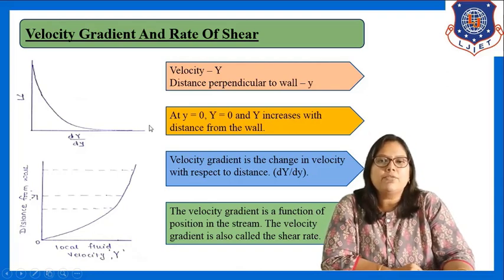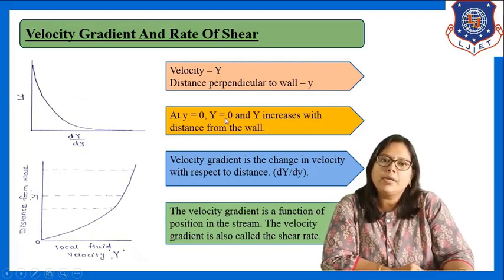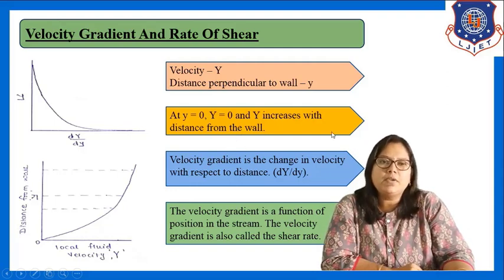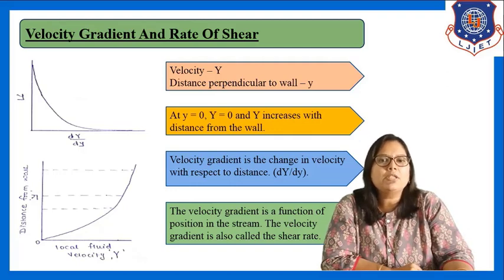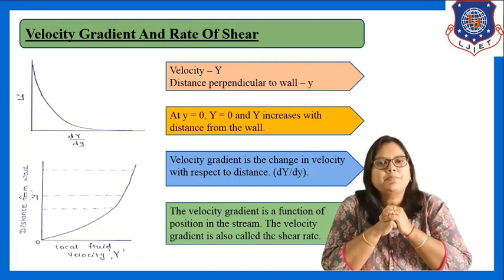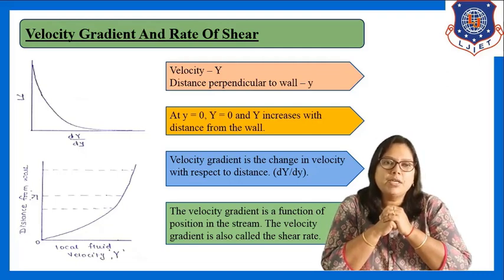From these two graphs, at small y equal to zero (distance is zero), capital Y is zero — as already explained in the concept of velocity field. Capital Y increases with distance from the wall. Velocity gradient, which is the change in velocity with respect to distance, is a function of position in the stream and is also known as shear rate.